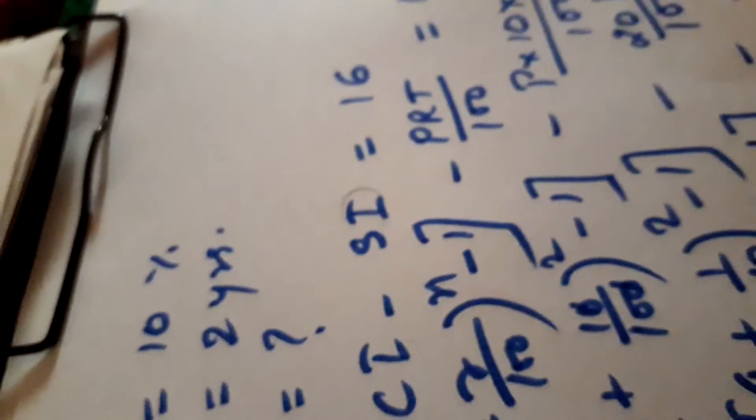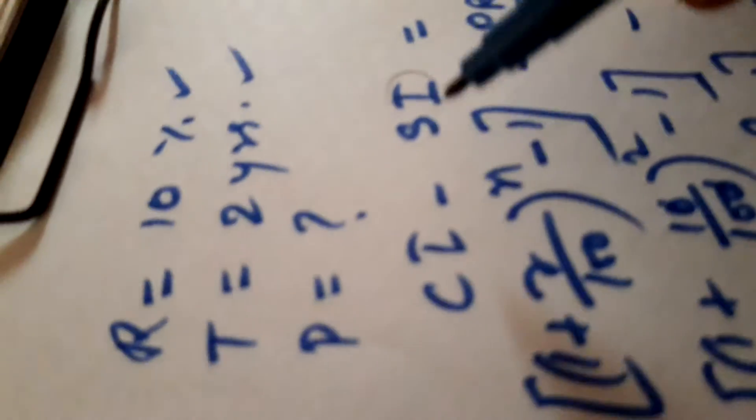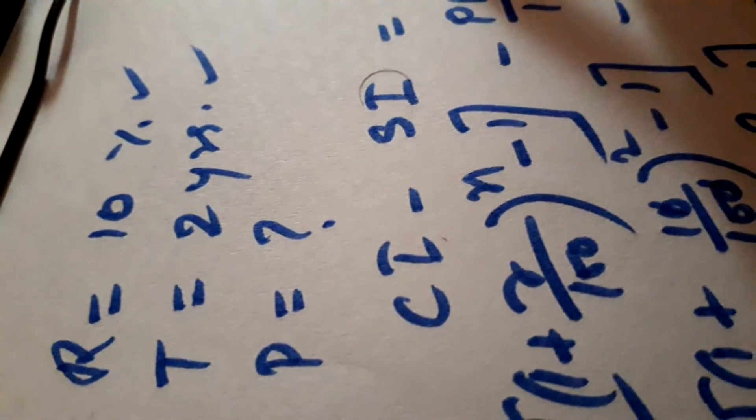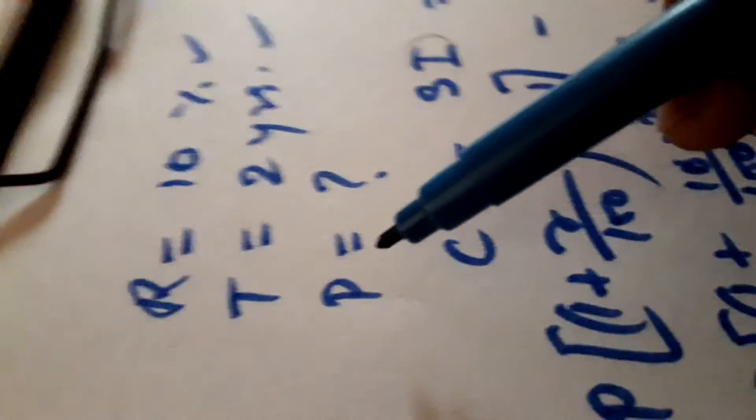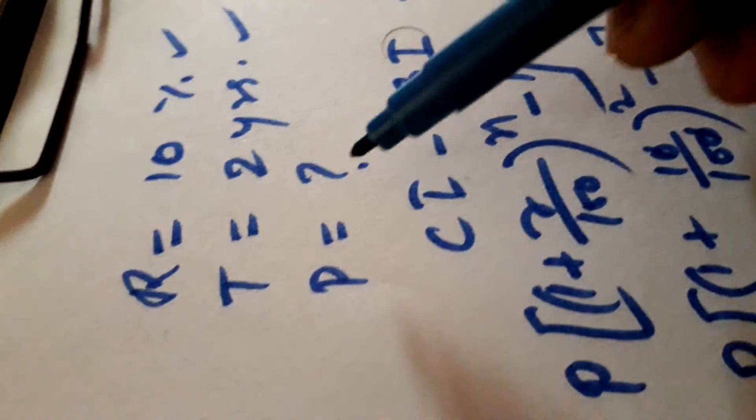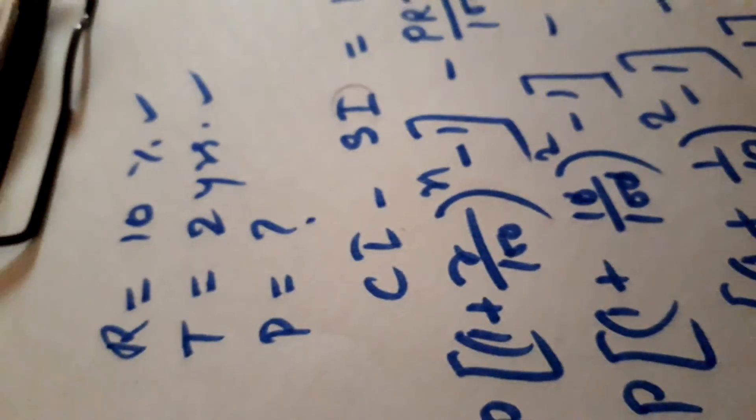So, in this case we were given the value of rate and time, and also difference of compound interest and simple interest. It was 16, but we did not know the value of P. In this way, we can find the value of P.